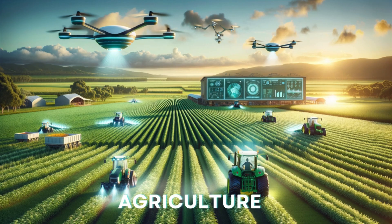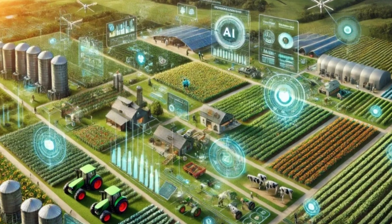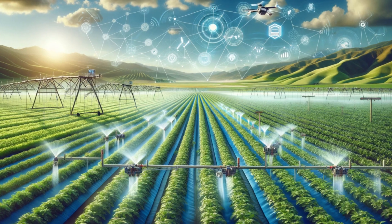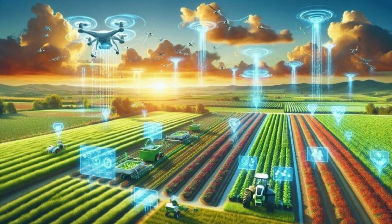Deep learning models analyze crop health using satellite images and sensors. Automated machines powered by deep learning can perform tasks like planting, watering, and harvesting. Predictive models forecast crop yields and optimize farming practices.